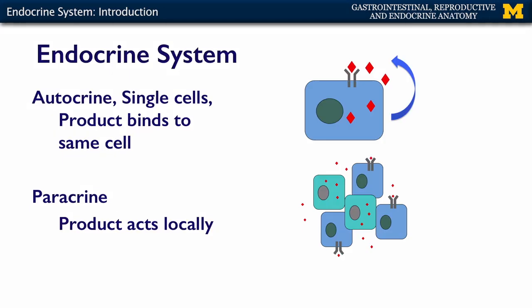Here are diagrams of these secretion types. For autocrine, we have a cell at the top where the little red diamonds are the secretory product. The cell secretes it, it comes back around and binds to the receptor on that same cell — 'auto' meaning self. For paracrine, acting locally: the little green cells make some sort of peptide or hormone, it's secreted, and it binds to the little blue cells on their receptors — a local interaction.